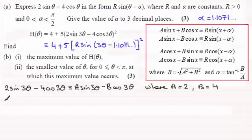So you can see that a is the 2, R is the square root of a squared plus b squared, so it's going to be square root of 2 squared plus 4 squared. In other words, 4 plus 16, 20, the square root of 20.